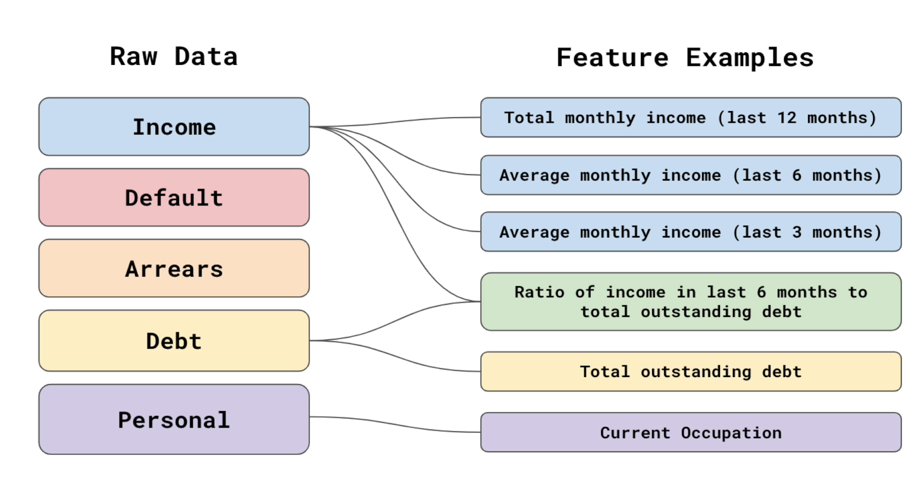For many problems, it may be difficult to manually group the features. You may have too many features, or the underlying data sources could be more complicated. Even for our car loan example, it's not clear that the six groups would be the best possible grouping. For example, one of the features in the personal group is current occupation. It may be better to include this with the income features.